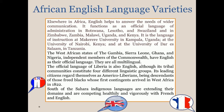The West African states of Gambia, Sierra Leone, Ghana, and Nigeria, independent members of the Commonwealth, have English as their official language — they are all multilingual. The official language of Liberia is also English, although its tribal communities constitute four different linguistic groups. Its leading citizens regard themselves as Americo-Liberians, being descendants of freed blacks whose first contingents arrived in West Africa in 1822. South of the Sahara, indigenous languages are extending their domains and competing vigorously with French and English.